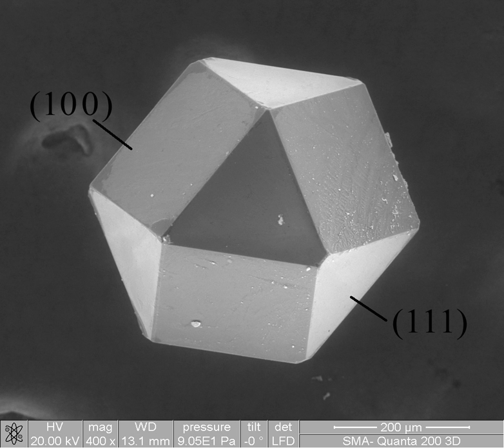Other significant metallic alloys are those of aluminium, titanium, copper and magnesium. Copper alloys have been known for a long time, while the alloys of the other three metals have been relatively recently developed. Due to the chemical reactivity of these metals, the electrolytic extraction processes required were only developed relatively recently. The alloys of aluminium, titanium and magnesium are also known and valued for their high strength to weight ratios and, in the case of magnesium, their ability to provide electromagnetic shielding. These materials are ideal for situations where high strength to weight ratios are more important than bulk cost, such as in the aerospace industry and certain automotive engineering applications.